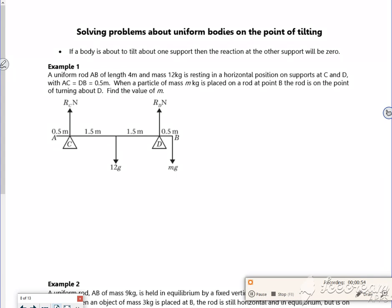When a particle of mass m is placed on the rod at point B, which is the end, it's just on the point of turning about D, so it's just about going to tip that way.